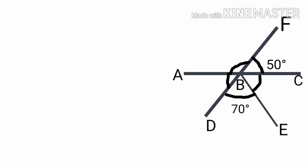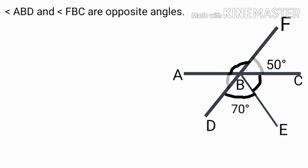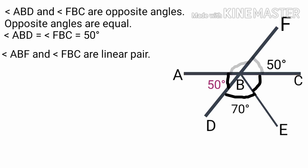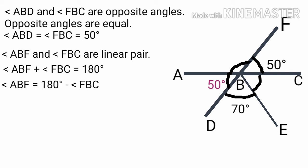Now the next figure. Here angle ABD and angle FBC are opposite angles. Opposite angles are equal, therefore angle ABD is equal to angle FBC, that is equal to 50 degrees. FB is a line drawn to line AC. Therefore angle ABF and angle FBC are a linear pair. Angle ABF plus angle FBC is equal to 180 degrees.